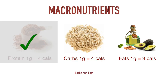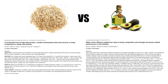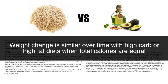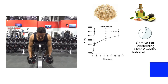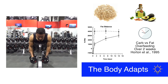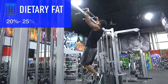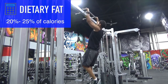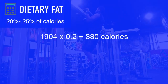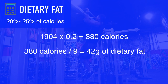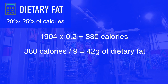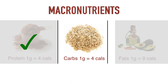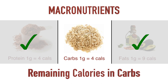Now that protein intake is established, let's move on to carbohydrates and fats. Several studies comparing high carb diets to high fat diets found that weight change over time was similar when calories were equal. So which of the two you consume more of should come down to personal preference and what helps you stick to your diet, because the body is adaptive and will adapt to whichever fuel source it's being fed. A general recommendation for dietary fat intake is between 20 and 25% of total calories. At 20%, that gives us 380 calories from fat, and dividing by 9 gives the total grams of dietary fat to consume.